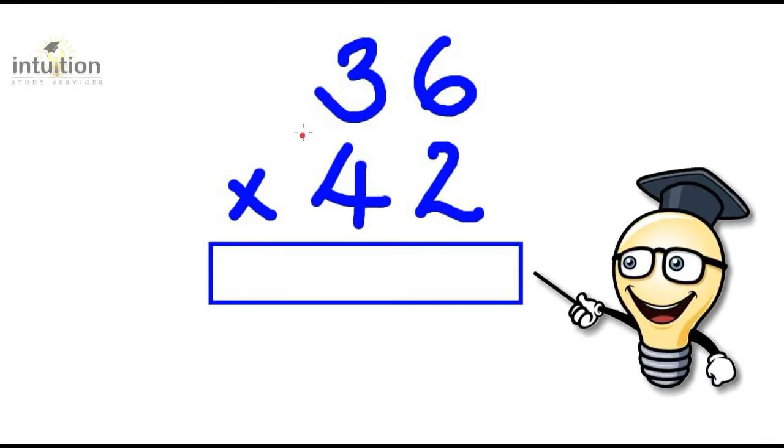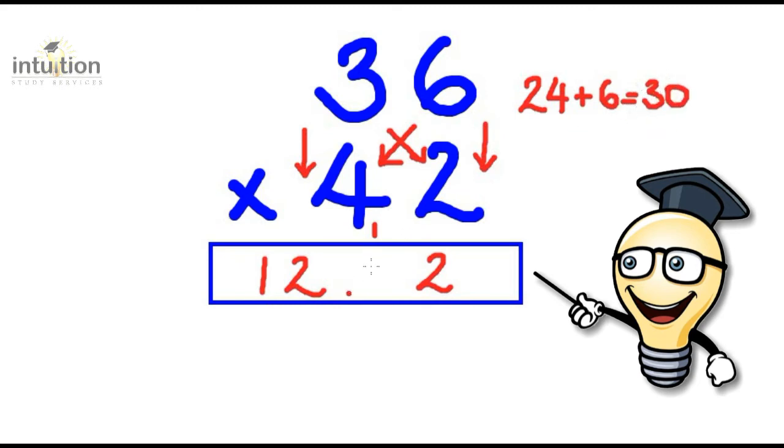So moving on to the tens column, we do 3 times 4, which gives us 12. Let me put that down there. Then we do 6 times 2, which is 12 again. Now, as we have a two-digit number, we can only fit one digit in the answer box. So we put the 2 there and we carry the 1 over. Then we do the cross. So we do 6 times 4, which is 24. And we want to add that to 3 times 2, which is 6. That totals to 30. Now, in the answer box, we can only fit one digit in. So we've got to carry the 1 from before and that gives 31. So we put the 1 here and the 3 there as it's been carried.